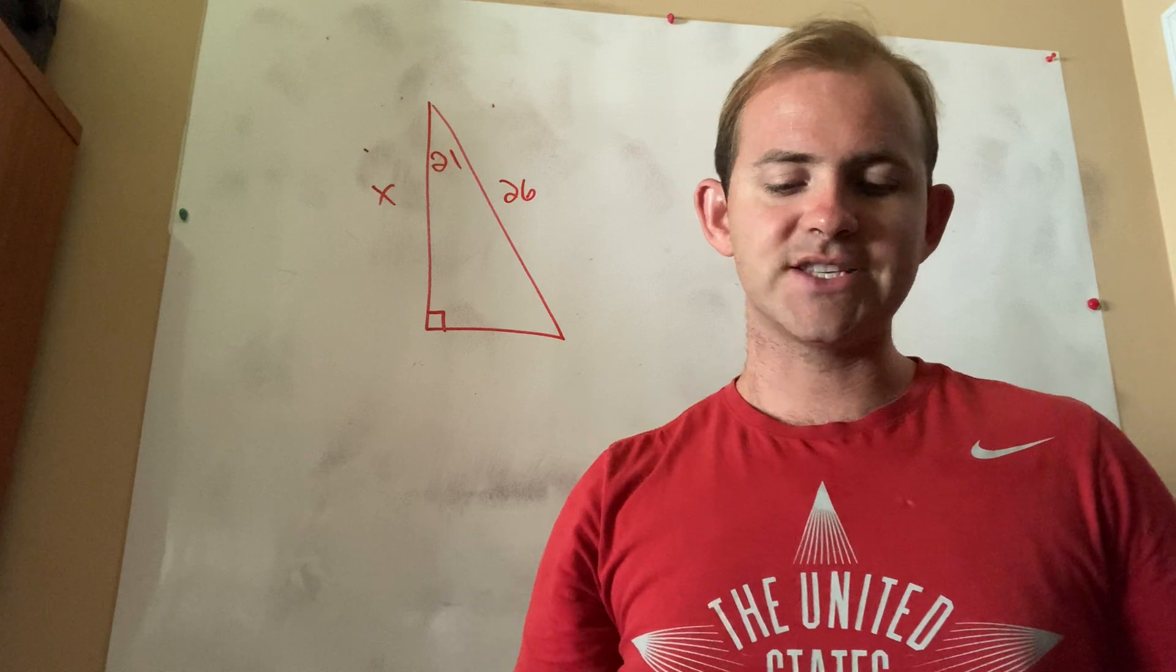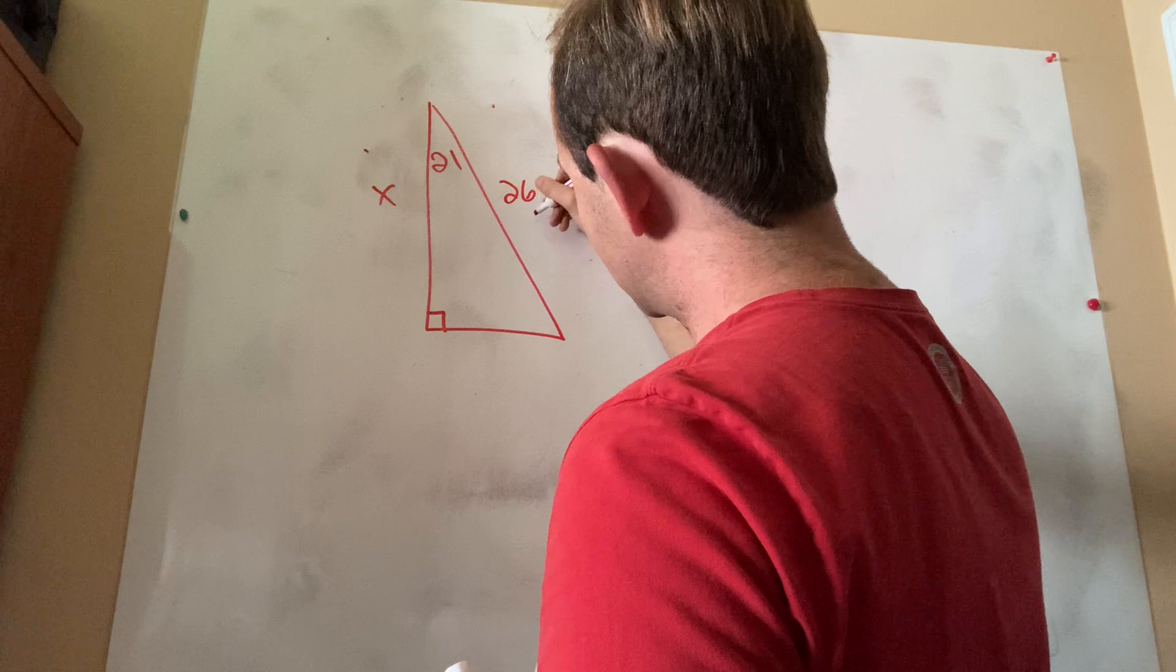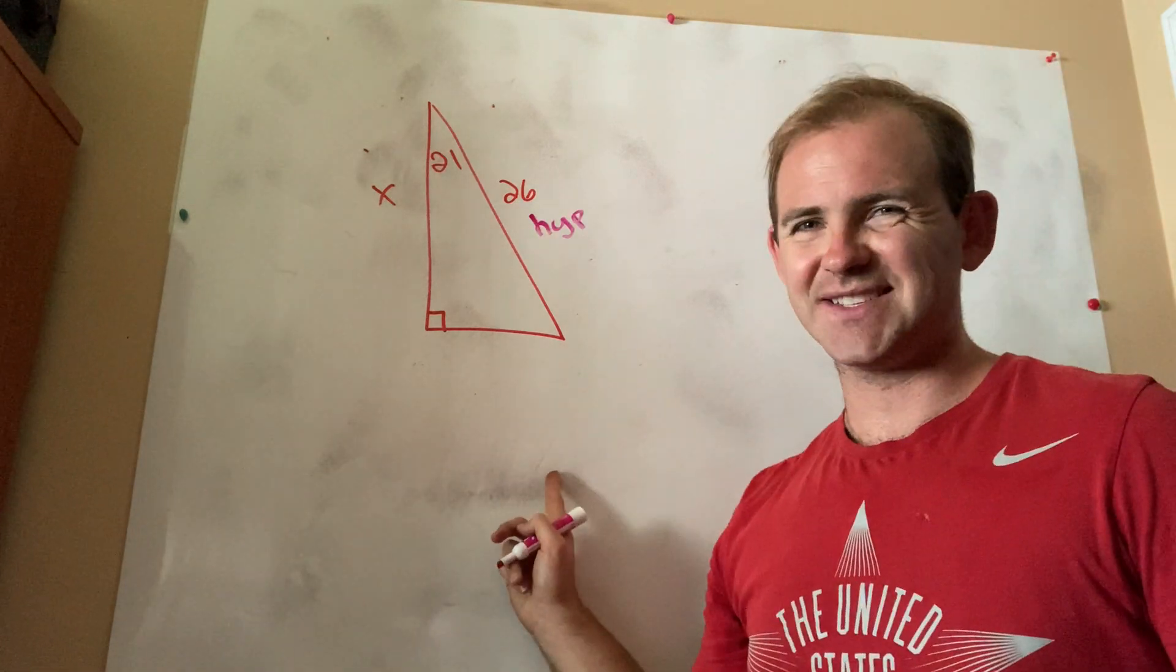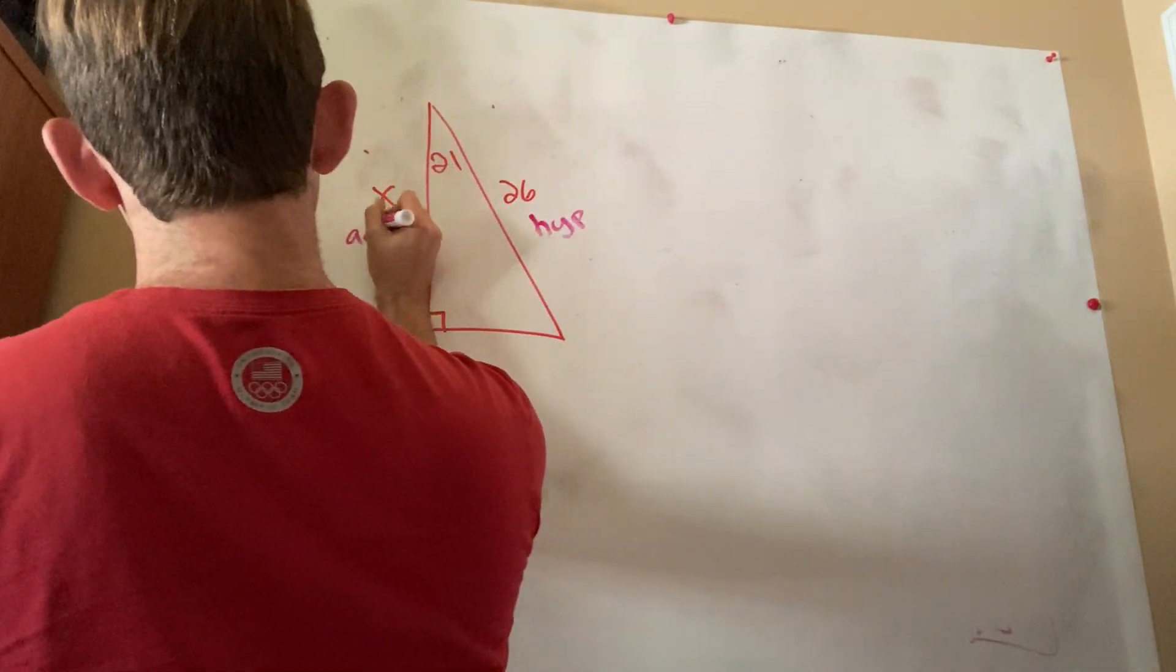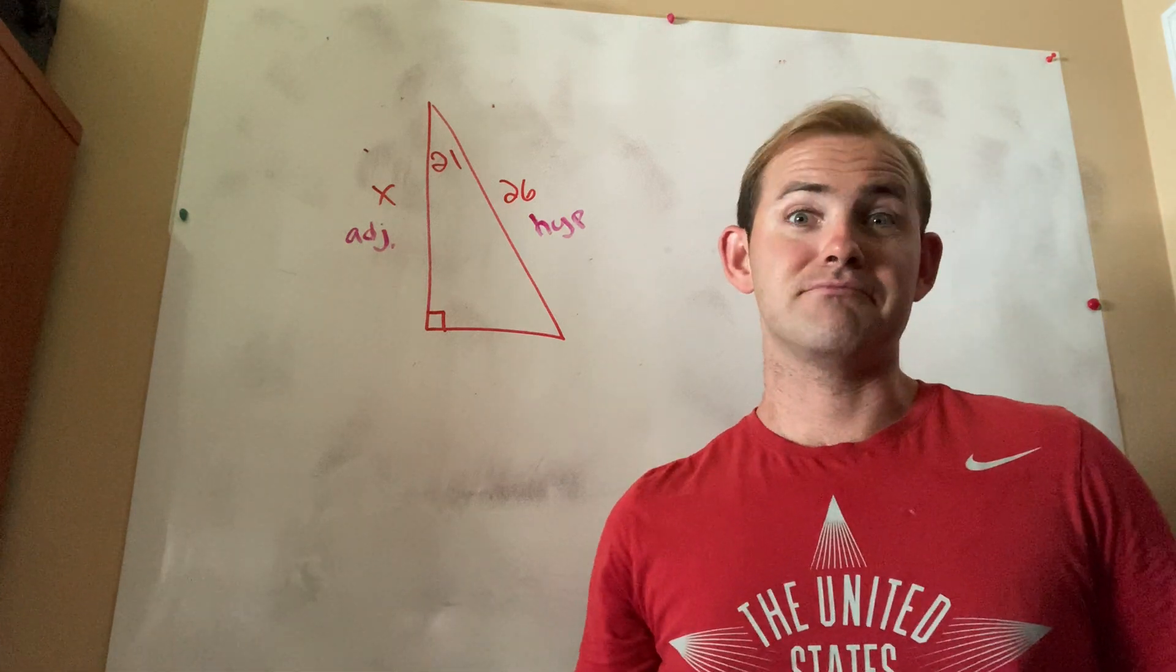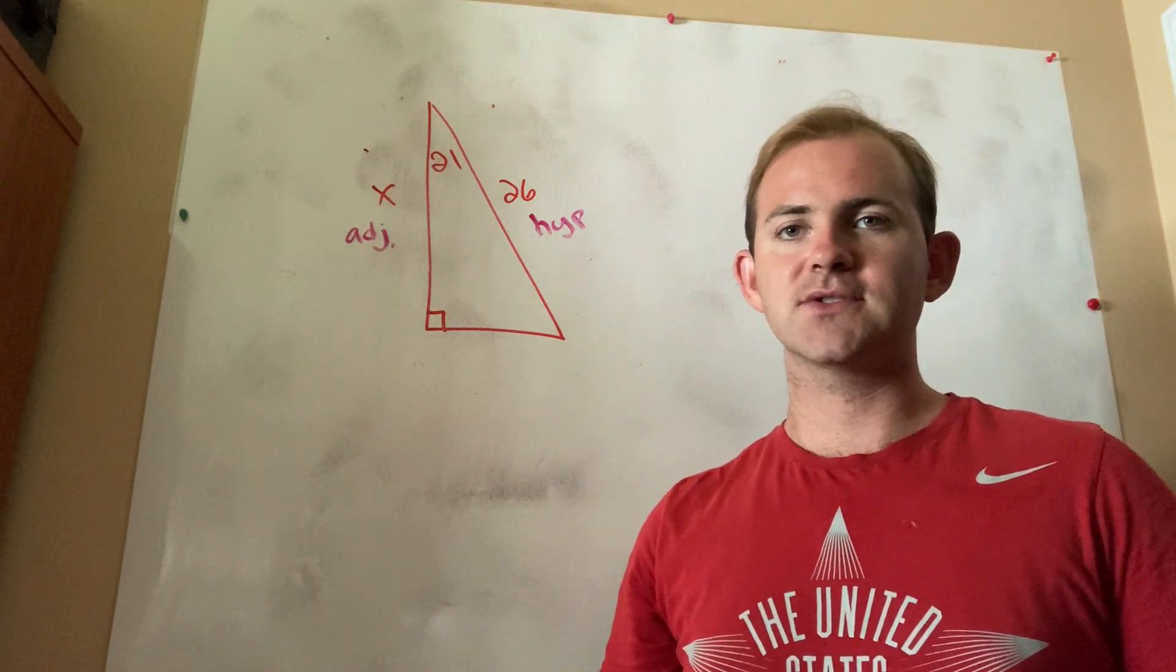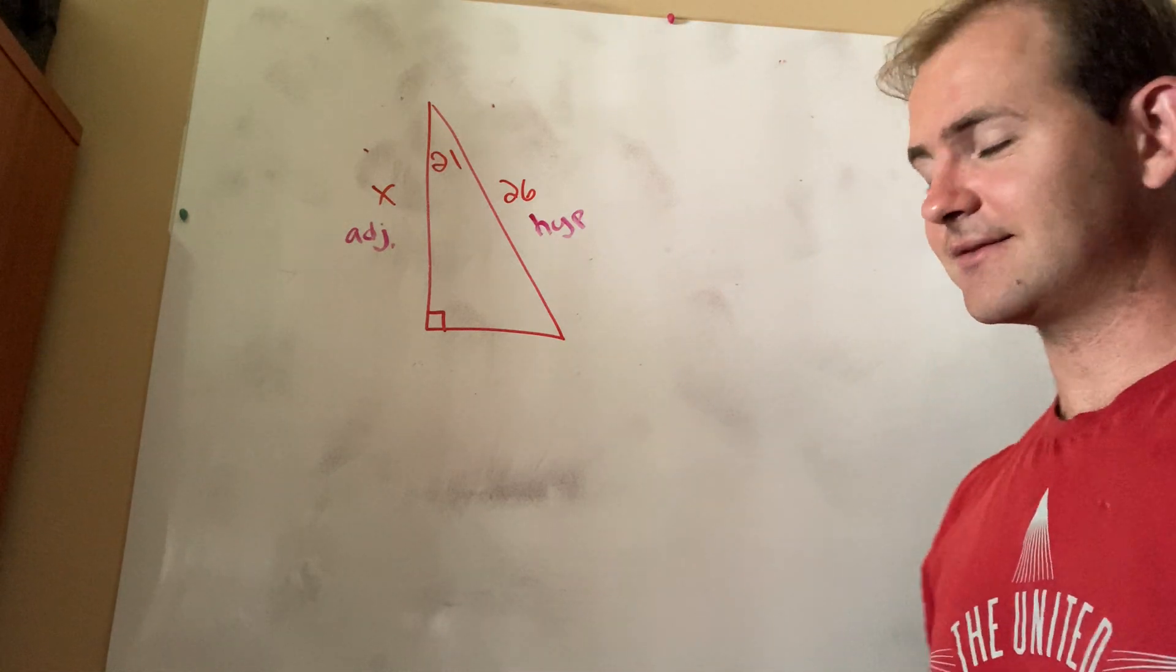So first things first, let's do some labeling. I know they gave me the hypotenuse because that's across from the right angle. So I'm going to label that HYP. They did not give me the opposite, so what's the only one that's left? That would be the adjacent. Which is the only one of the three ratios that uses both adjacent and hypotenuse? Is it sine, cosine, or tangent? That would be the cosine.